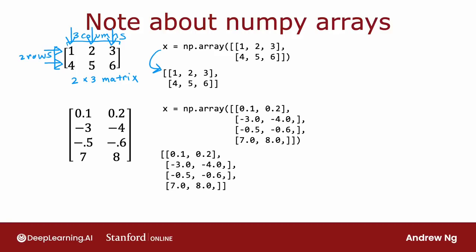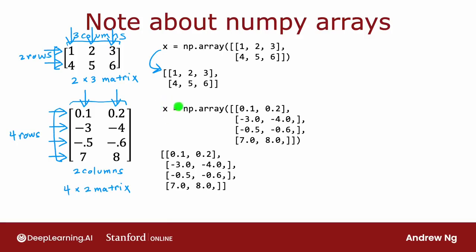This sets x to be this 2D array of numbers — a matrix is just a 2D array of numbers. Here's another matrix. It has four rows and two columns, so this is a four by two matrix. To store this in code, you would write x equals np.array and use the corresponding syntax to store these four rows of the matrix in the variable x, creating a 2D array of these eight numbers. Matrices can have different dimensions — you saw a two by three and a four by two matrix.